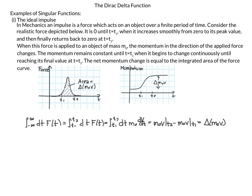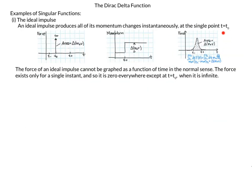The net momentum change equals the integrated area of the force curve. We can write: the integral from negative infinity to infinity of F of T dt, which reduces to the integral from T1 to T2 of M0 dV/dt dt, equal to the change in M0 V. Now we compare this realistic force to an ideal impulse, which produces all of its momentum change instantaneously at the single point T0.